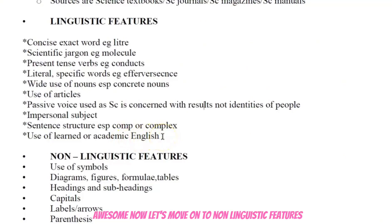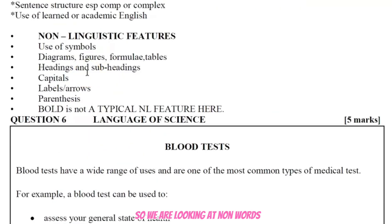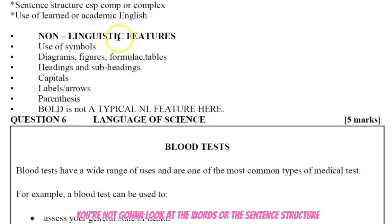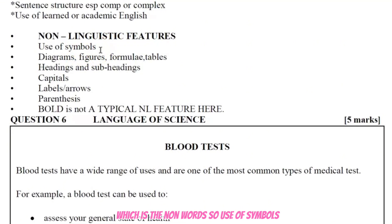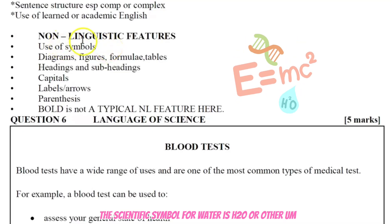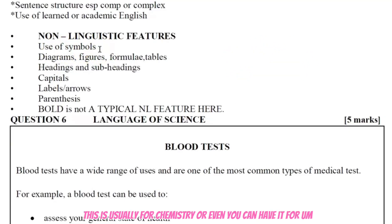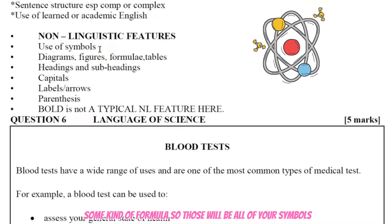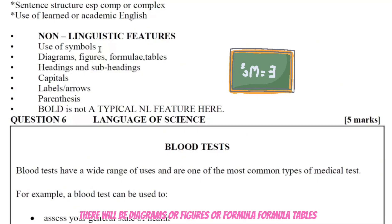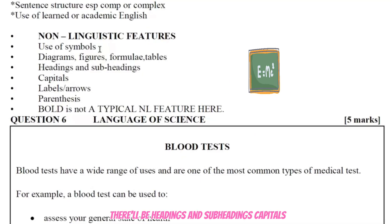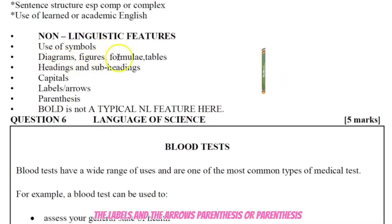Now let's move on to non-linguistic features. Linguistic features dealt with words; non-linguistic features are the non-word elements. When asked to identify a non-linguistic feature, do not look at words, sentence structure, or jargon — look at the other features. These include: use of symbols, for example H₂O for water, or O₂. Symbols commonly appear in chemistry or formulas. There are also diagrams, figures, formulae, tables, headings and subheadings, capitals, labels, and arrows.